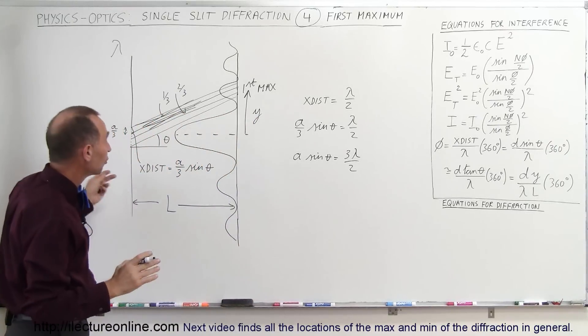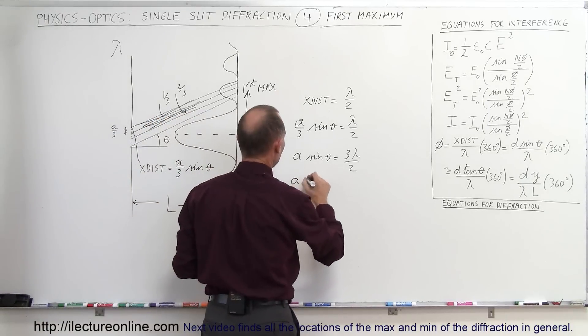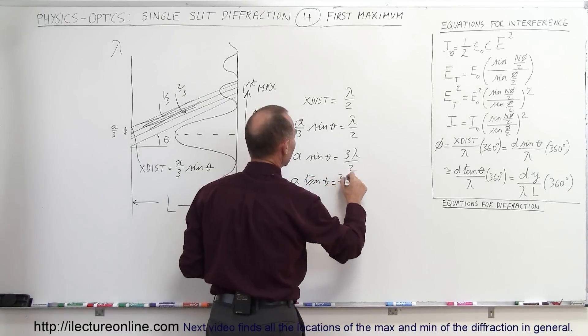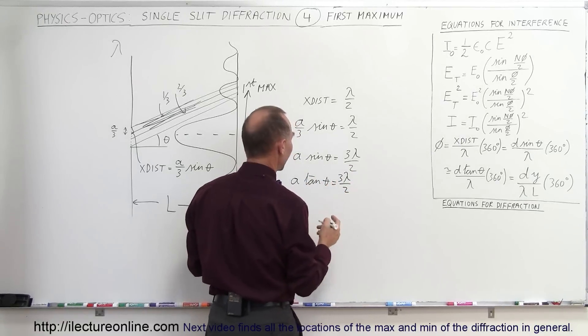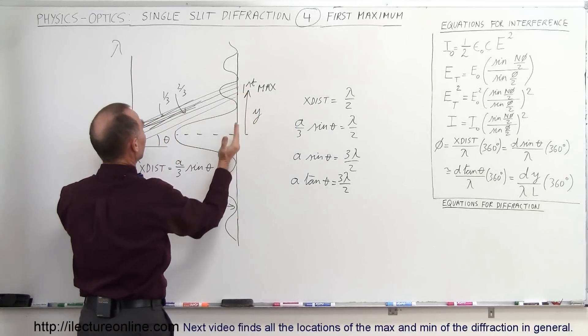Now for very small angles, and these are usually very small angles, the sine of theta is approximately equal to the tangent of theta, so a times the tangent of theta is equal to 3 lambda over 2, and finally the tangent of theta by definition is the opposite side, y divided by the adjacent side,